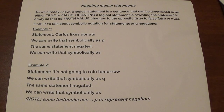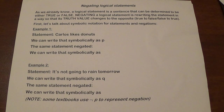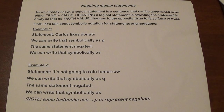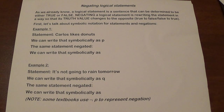Today we're going to discuss how to negate logical statements. We already know a logical statement is something that we can determine to be either true or false. When you negate that, you change what's called its truth value. So in other words, if the statement was true, when you negate it, it becomes false and vice versa.